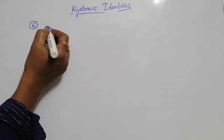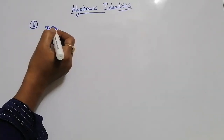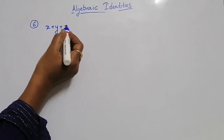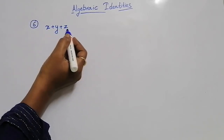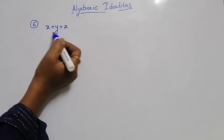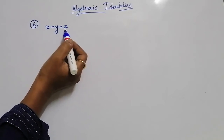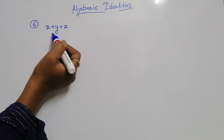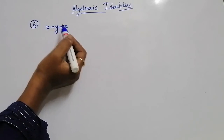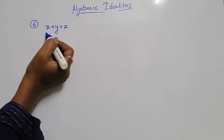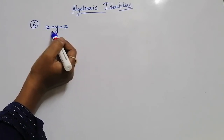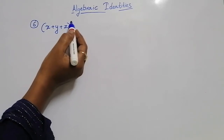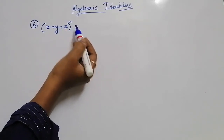Now, the next identity I am going to explain is x plus y plus z. What I have done is I have taken three terms. Till now we have seen for only two terms, squaring and cubing. Now I have taken three terms. x plus y plus z whole square, I am going to do now.